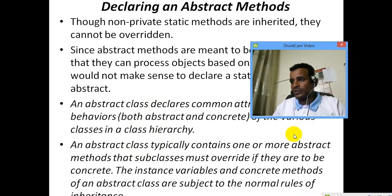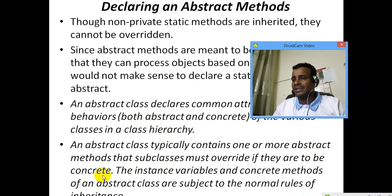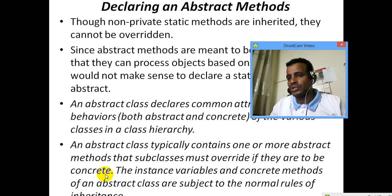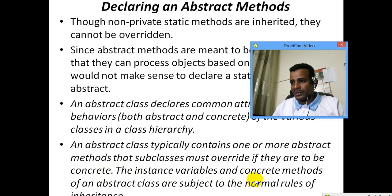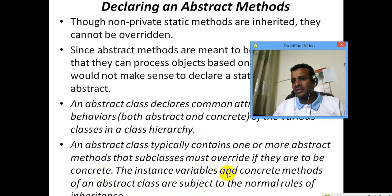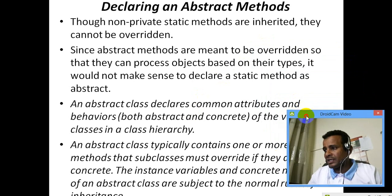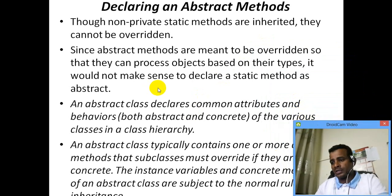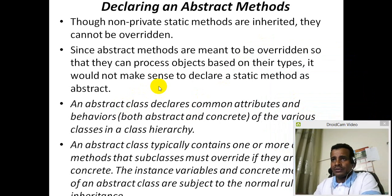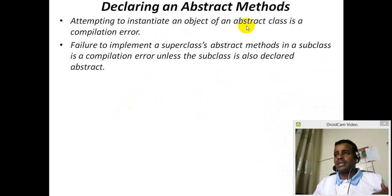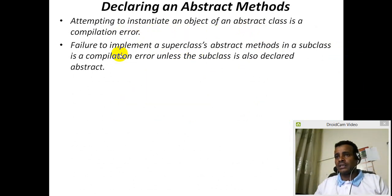Abstract class typically contains one or more abstract methods that subclasses must override if they are to be concrete. The concrete class is the same as the implementation model. The instance variables and concrete methods of an abstract class are subject to the normal rules of inheritance. Failure to implement the superclass's abstract method results in a compilation error.